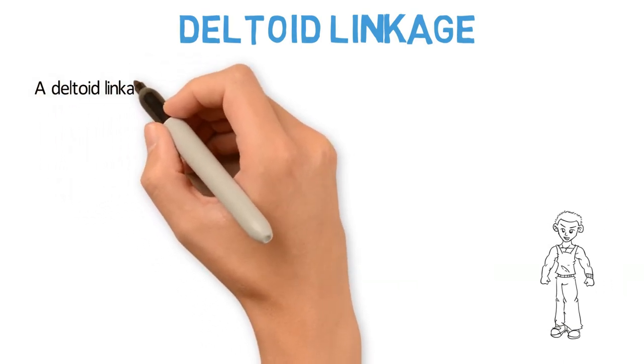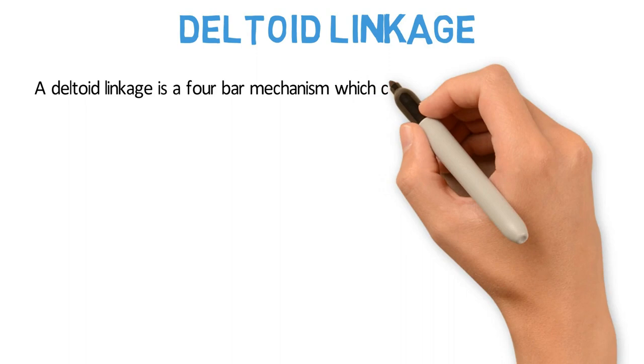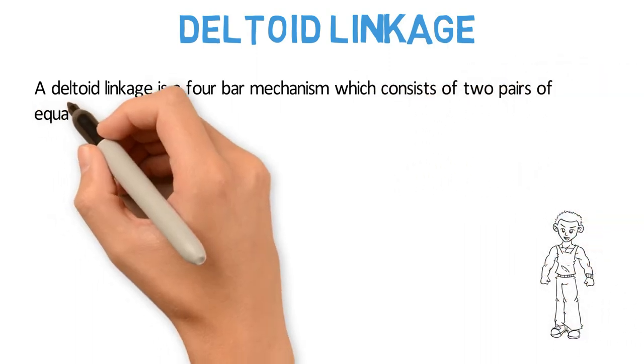A deltoid linkage is a four-bar mechanism which consists of two pairs of equal and adjacent links.